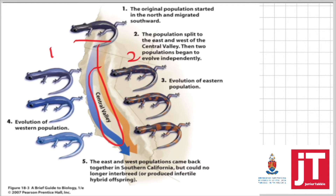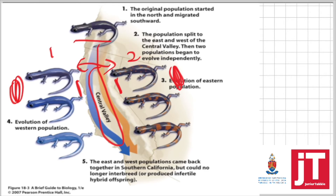What happened is it separated the ancestral population into two on either side of the valley. Each of those two populations — you can see they're on different sides of the valley — now had no gene flow between these two different populations on either side of the valley.